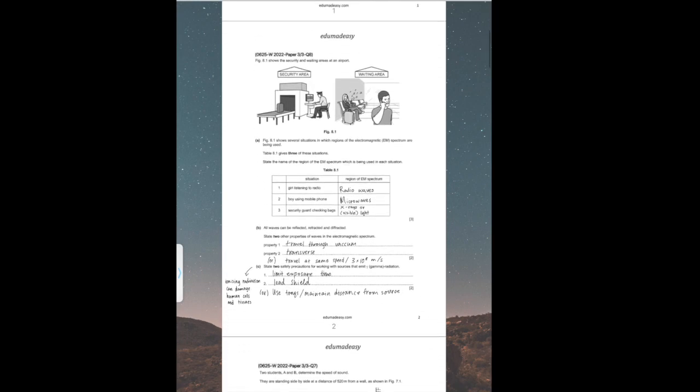The first question states, on Figure 8.1, it shows the security and waiting areas at an airport. Question A states that Figure 8.1 shows several situations in which regions of the electromagnetic spectrum are being used. Table 8.1 gives three of these situations. State the name of the region of the EM spectrum being used in each situation. For this, you should have memorized the uses for each of the EM spectrum waves before the exam. For the girl listening to the radio, it's radio waves.